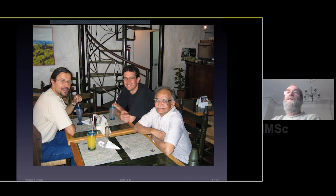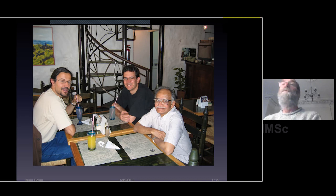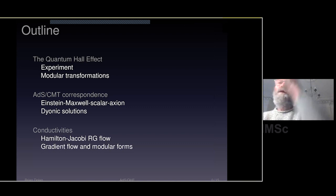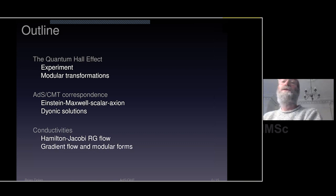I'm going to talk today about the quantum Hall effect and attempt to model it using ADS-CMT — that's condensed matter physics — not ADS-CFT, because the quantum Hall effect is actually not described by a conformal field theory. I'll start off with a brief review of the quantum Hall effect and the experiments, then say a little about the modular group and its applications to the quantum Hall effect, then give a brief introduction to ADS-CMT. Hopefully I'll have time to get to the meat of the talk, which is the conductivity in the quantum Hall effect as viewed from ADS-CMT.